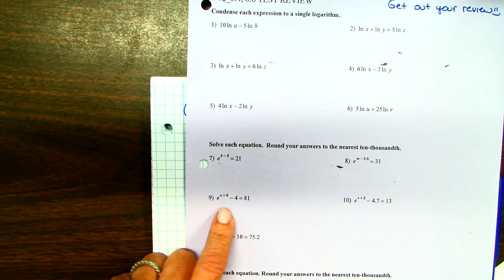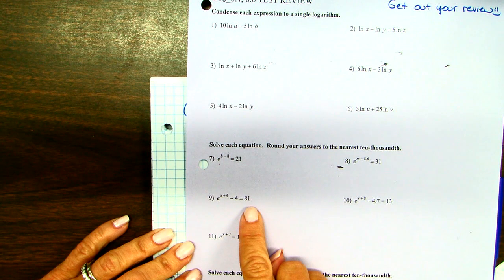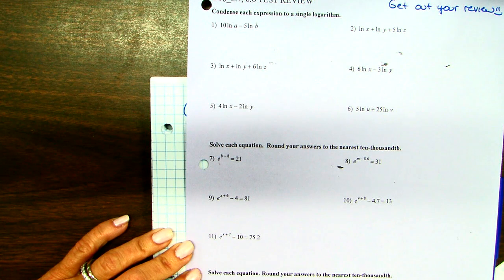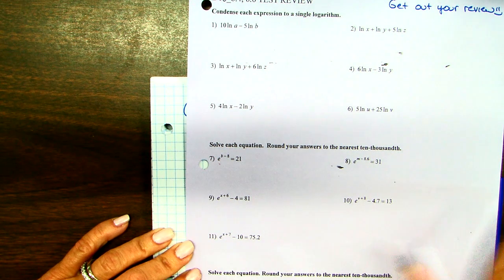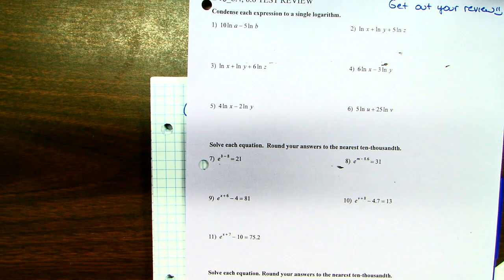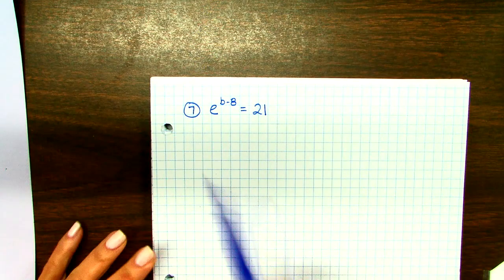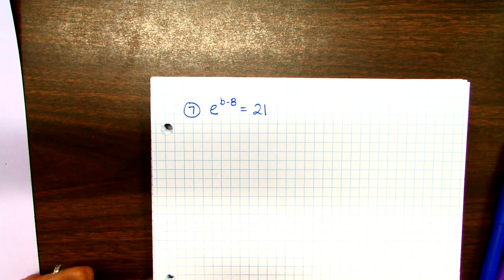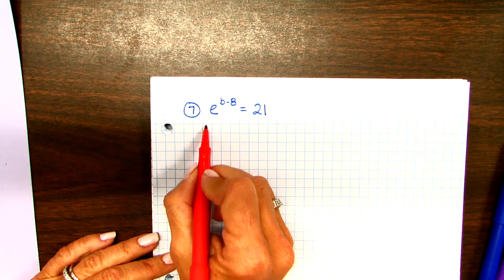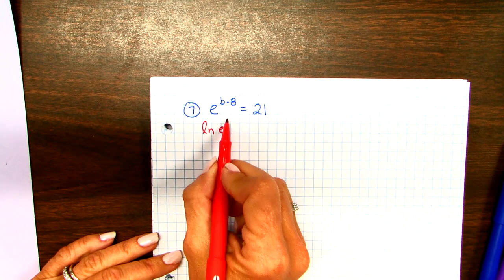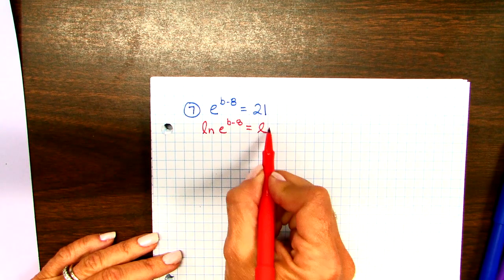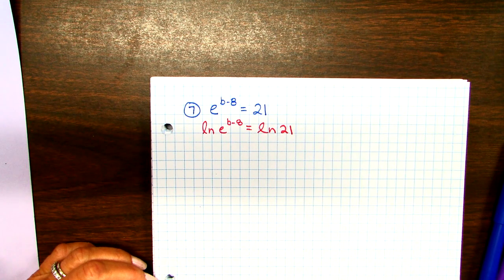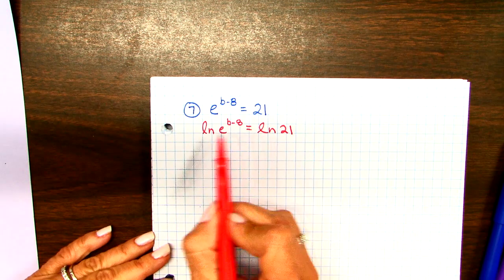Look at number 9. Before I start the problem, I would have to move this minus 4 to the other side by adding 4. This one, I would add 4.7. This one, I would add 10. So whatever's hanging out on the left-hand side, before you do anything, it has to move. As I said, number 7 doesn't have anything on the left-hand side to clean up or move. So we start by giving both sides a natural log. We're creating an equation that has logs in it so we can use the properties of logs.